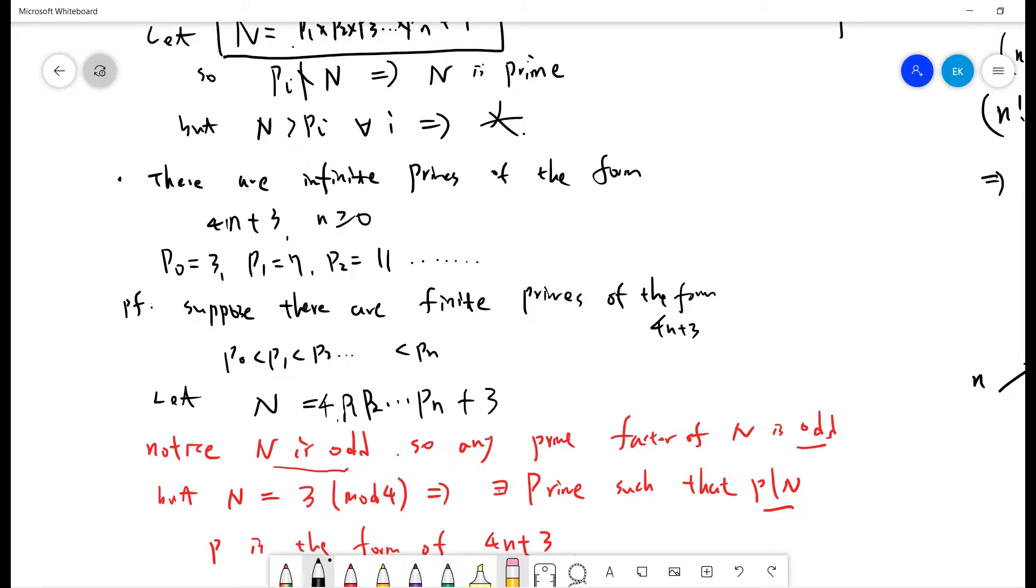Notice that N is odd, because this is even plus odd. So N is odd. So any prime factor of N is odd. Everybody agree, right.